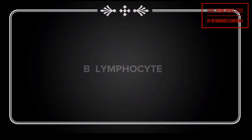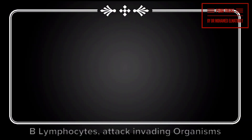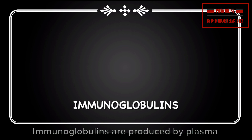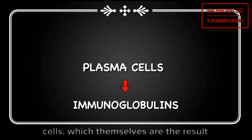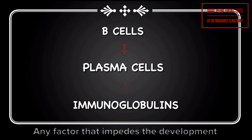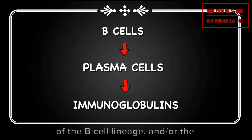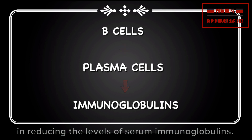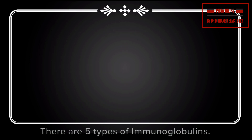B-lymphocytes attack invading organisms using a weapon called immunoglobulins. Immunoglobulins are produced by plasma cells, which themselves are the result of the development and differentiation of B-cells. Any factor that impedes the development of the B-cell lineage and/or the function of mature B-cells may result in reducing the levels of serum immunoglobulins.